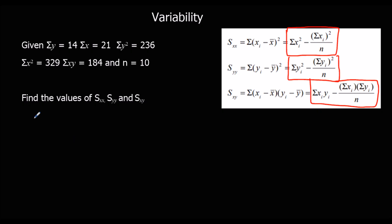So SXX is the sum of the X squareds, which is 329, minus the sum of the X's squared, which is 21 squared, divided by how many, which is 10. So I'm going to type it into the calculator, and we get 284.9.